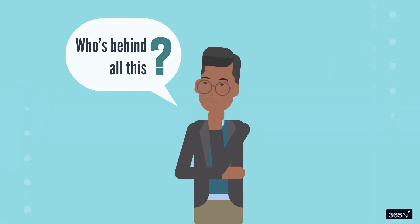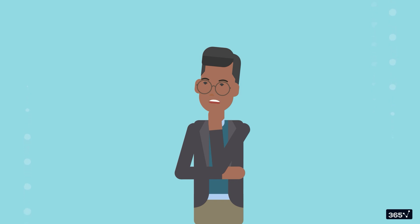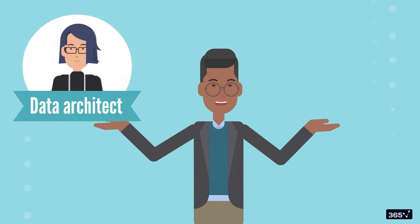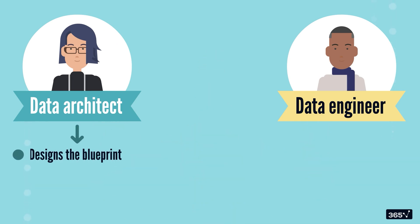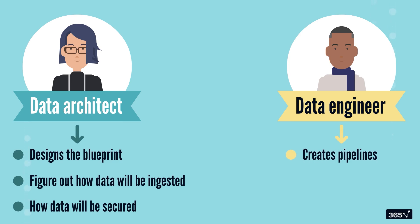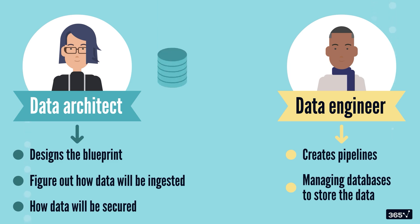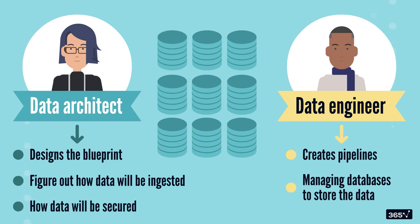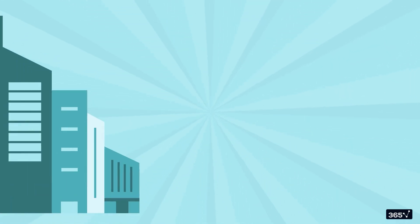So who's behind all this? That's where data architects and data engineers come in. A data architect designs the blueprint — figuring out how data will be ingested, where it will be stored, how it will flow through the system, and how it will be secured. Think of a data architect as an urban planner who lays out the high-level design. Once the blueprints are ready, data engineers come in as the builders — creating pipelines to ingest and flow data, managing databases, and ensuring all processes comply with the organization's security requirements. Together, they build systems that can handle billions of rows of data daily.